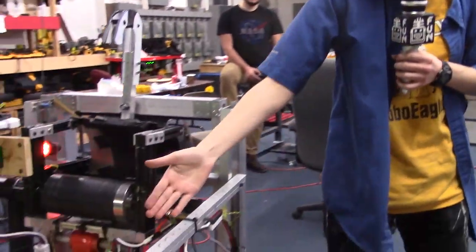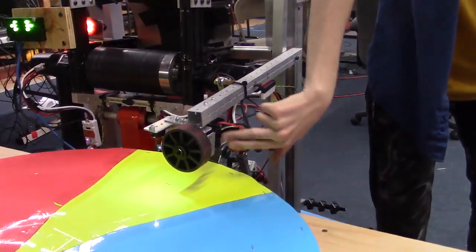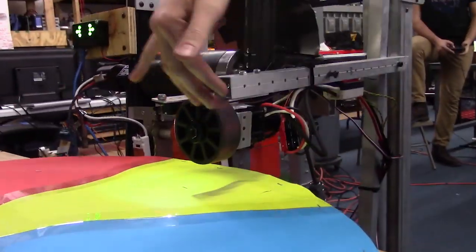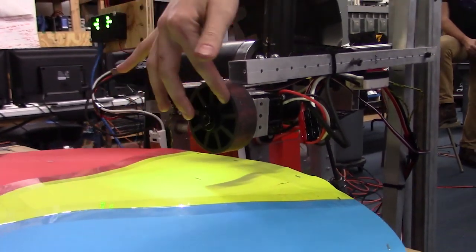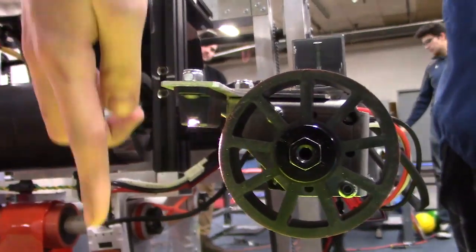What we have here is a Neo 550 motor with a Versa planetary gearbox, and then we have a compliant wheel, three inch, and then a Rev V3 color sensor mounted right onto that to view the color.